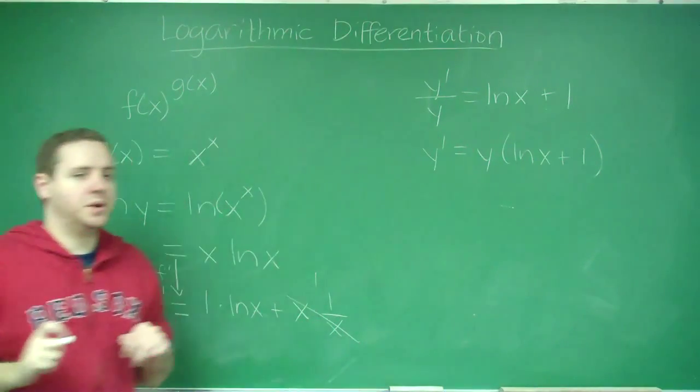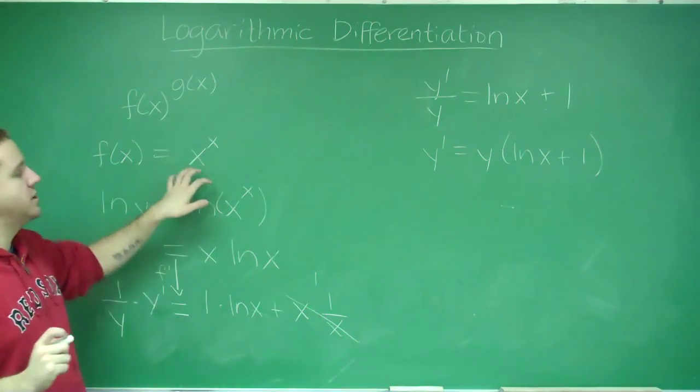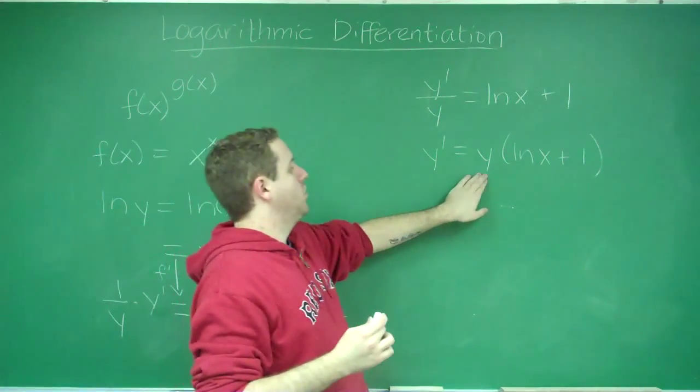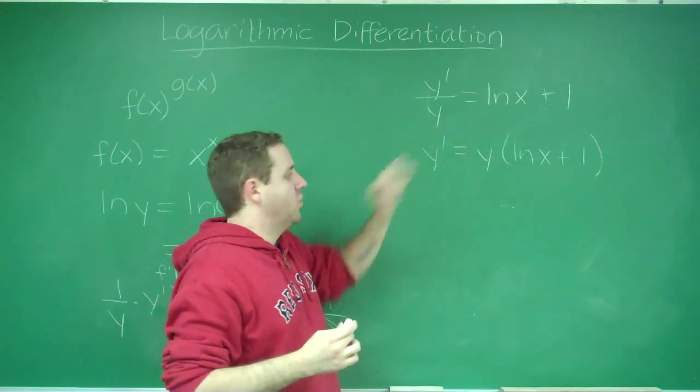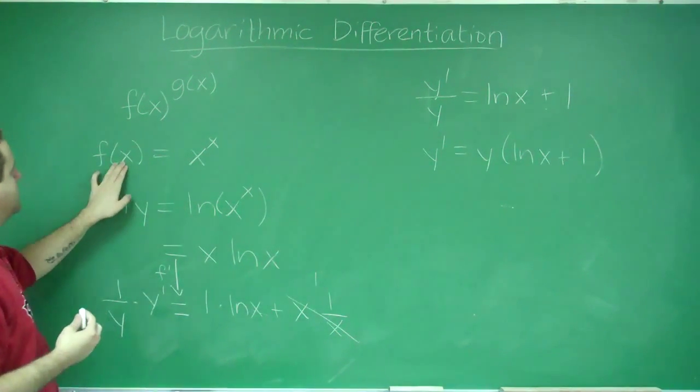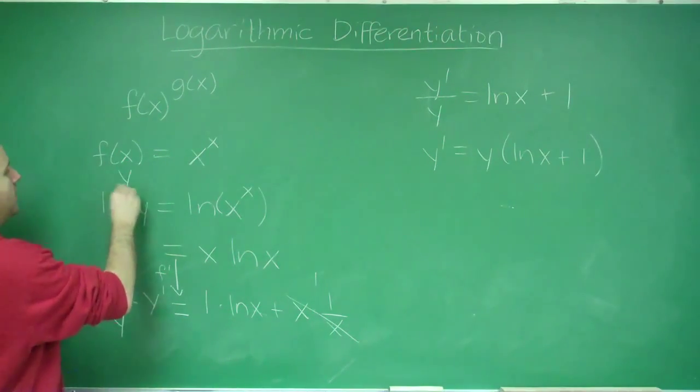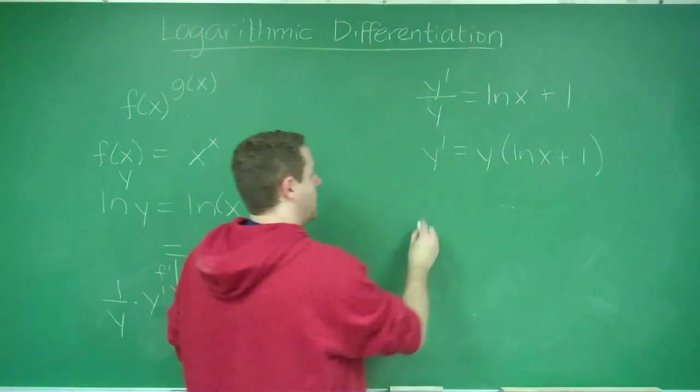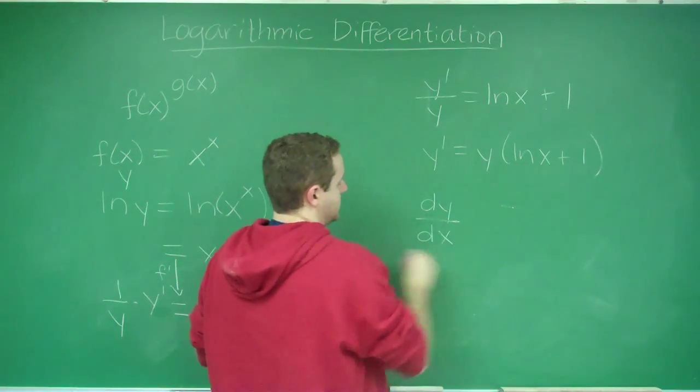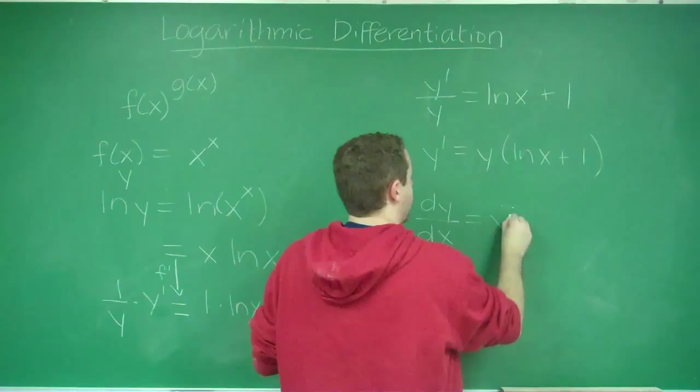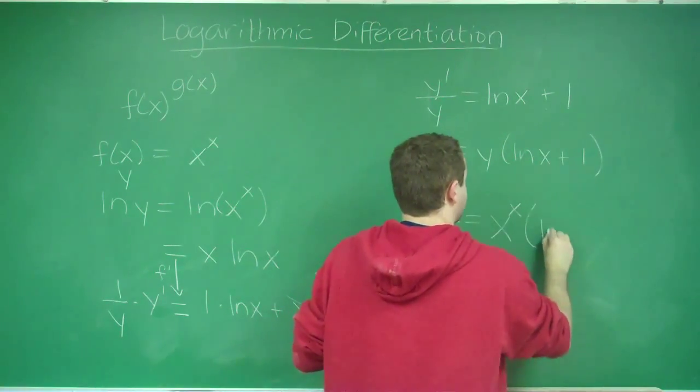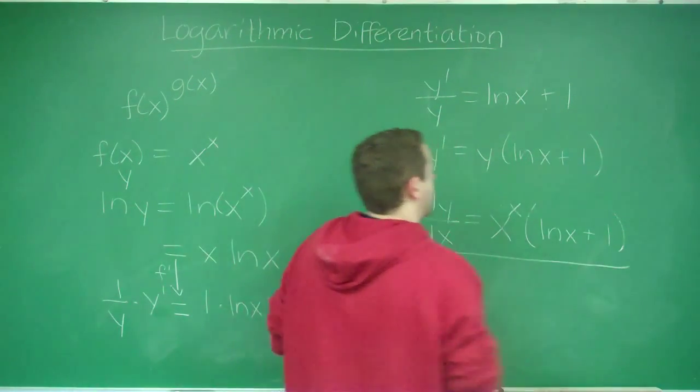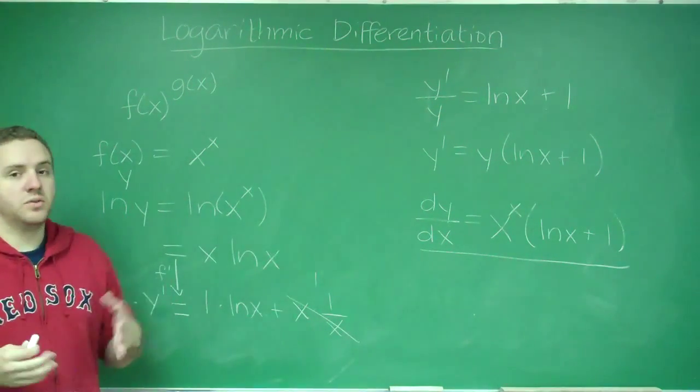But the last thing we want to do is because our original function was not an implicit function, we had a function of x. We don't want to have this y when we're looking at our derivative, but you know that your original function, the y, was equal to x to the x, so we can just plug that back in. And you get your derivative, I'll write it as dy/dx this time, is x to the x times (ln x plus 1). And that would be your derivative using logarithmic differentiation.